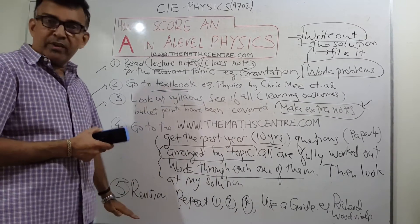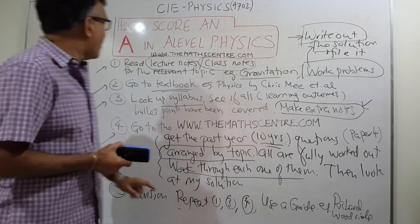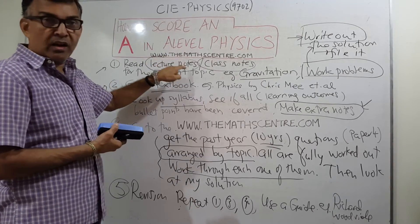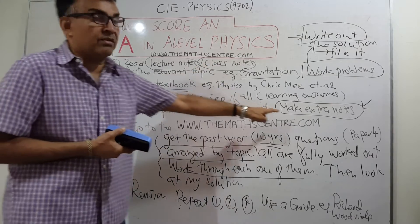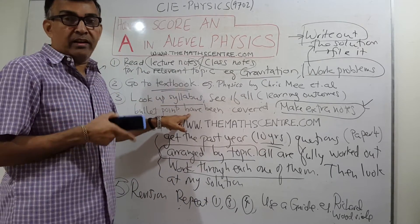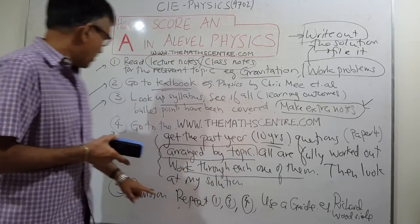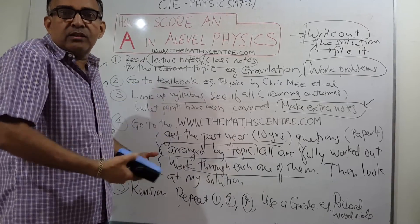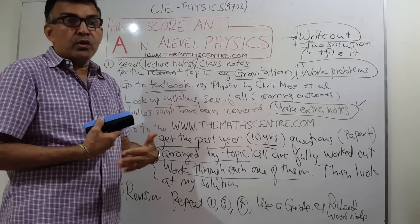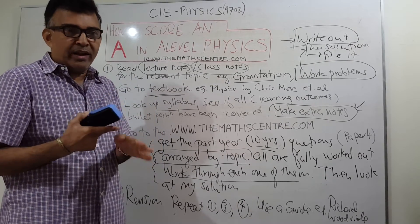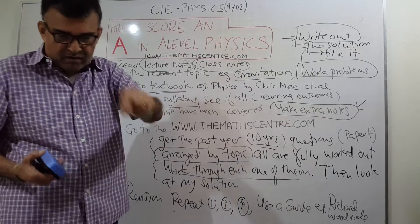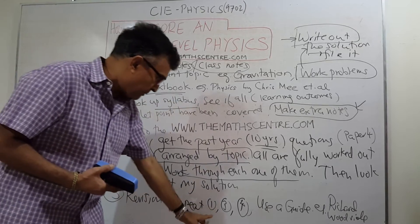When you start revision, repeat steps 1, 3, and 4. Step 1 is reading your lecture notes — to which you've now added extra notes. Step 3 is checking all the learning outcomes of the syllabus. Step 4 is going back to the past paper questions and rewriting the answers. Rewrite because sometimes when you've looked at solutions, you think you know how to do it, but when you try on your own you'll struggle. Always write out the solutions to make sure you truly know the material.